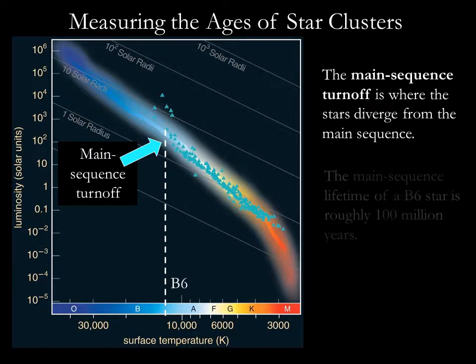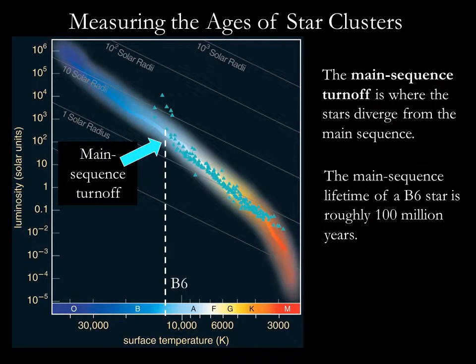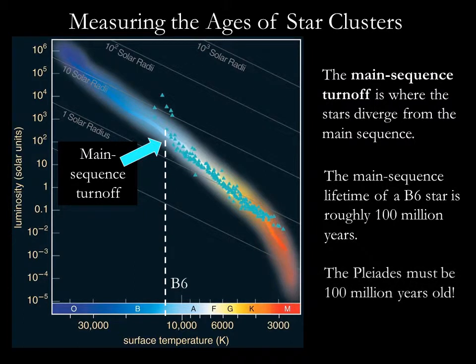The main sequence lifetime of a B6 star is roughly 100 million years, so this must be the age of the Pleiades. Any star in the Pleiades that was born with a main sequence spectral type hotter than B6 had a lifetime shorter than 100 million years and is no longer found on the main sequence.